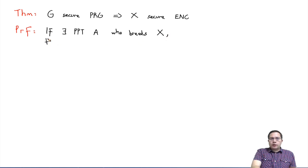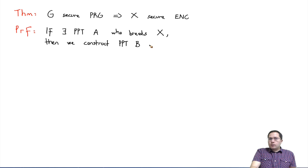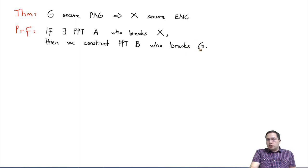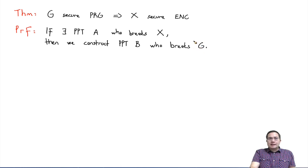Then we are going to construct — remember this is a constructive proof — another PPT adversary B. What is B going to break? B is going to break G. What does breaking G mean? It will distinguish between random and pseudo-random: the output of G versus some randomly picked value of the same length, with non-negligible advantage, so the difference between the probabilities will be non-negligible.